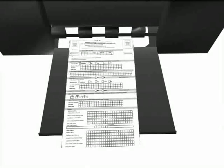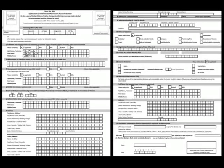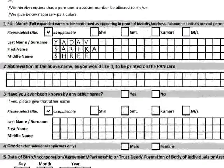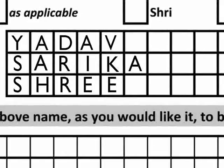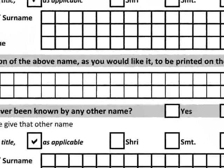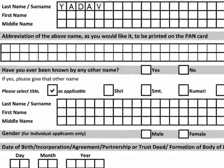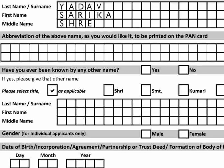The next step is to fill the form. The form is to be filled legibly in block letters in English only. It is preferable to use a pen with black ink to fill the form. In each box fill only one character, that is alphabet, number or a punctuation sign. A blank box must be left after each word.